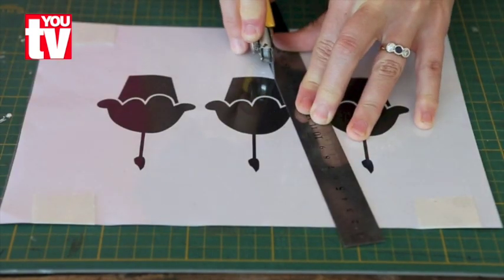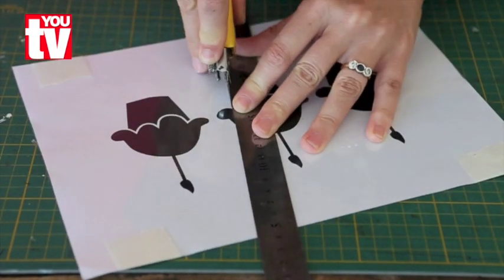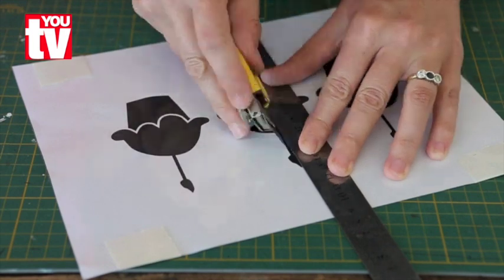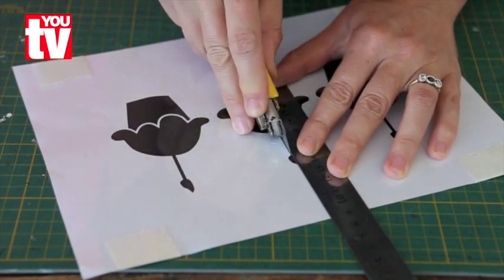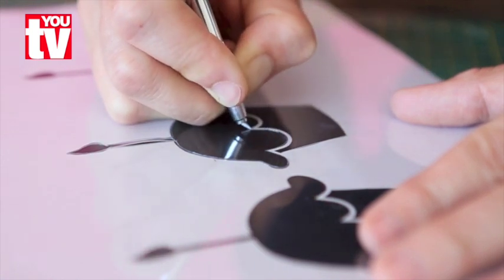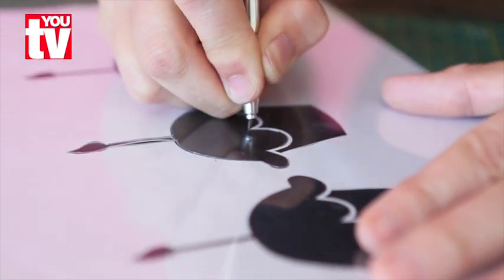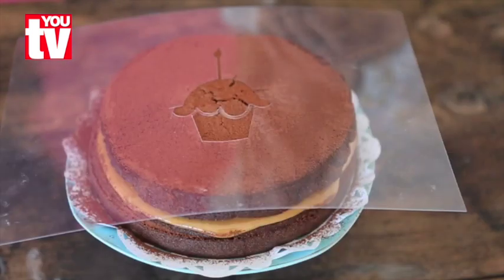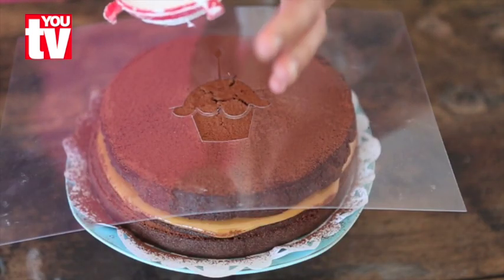Cut the straight lines with a craft knife and steel ruler. Use the swivel blade knife to cut on the rounded edges. Now decorate your cake with your stencil.